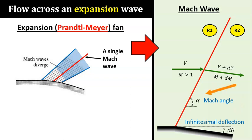The Mach angle is α, and the flow vector before the wave in region 1 will change slightly into a different vector after the wave in region 2. The velocity V will change by dV, and the Mach number M will change by dM. Both dV and dM can be either positive or negative, indicating that they can either increase or decrease.